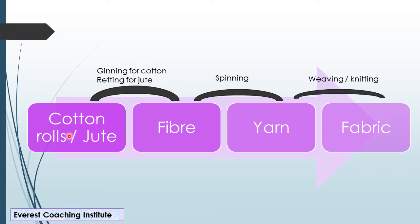So, cotton and jute — you have only plants, cotton and jute, covered in detail in your academics. Cotton and jute are discussed in your class. We have covered how we use cotton rolls and jute, and how to process them. Cotton and jute, which we get from plants, we convert into fiber.